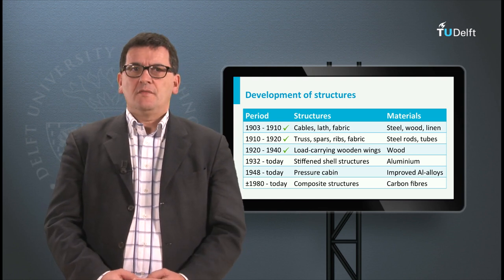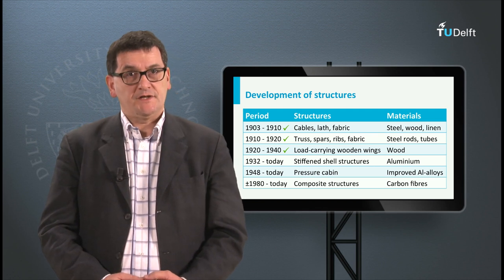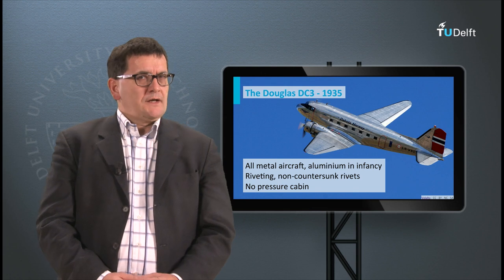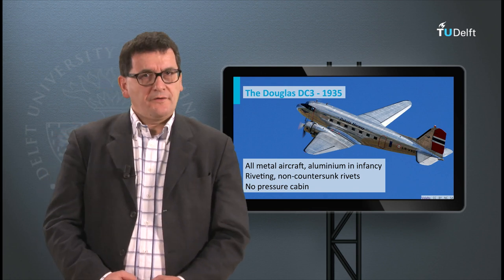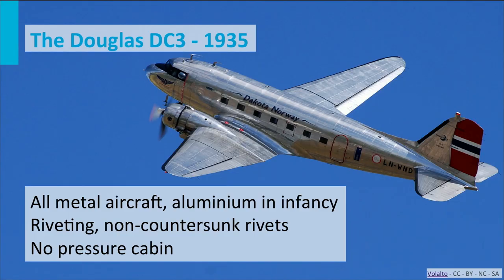The transition from aluminium to composites is comparable to the transition which took place in the 1930s. Douglas and Boeing were among the first aircraft manufacturers who made all-metal aircraft. In this picture you see the DC-3, a very famous aircraft which flew for the first time in 1935. Its predecessors, the DC-1 and DC-2, were all-metal aircraft too, though they were less famous. The structure of this aircraft and the skin were made of an aluminium alloy.